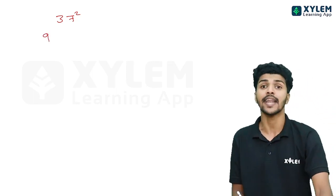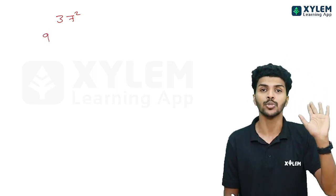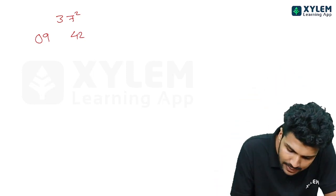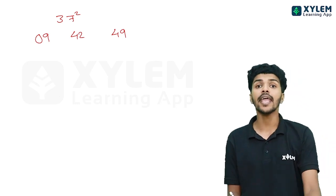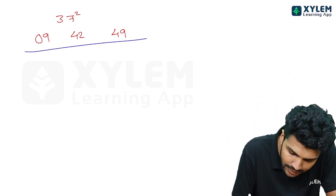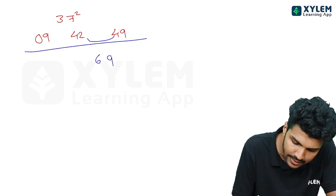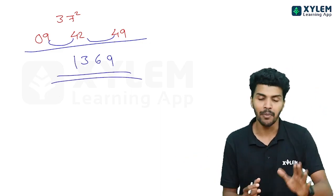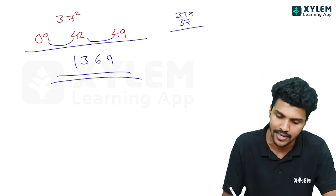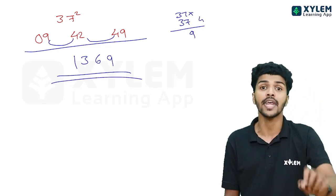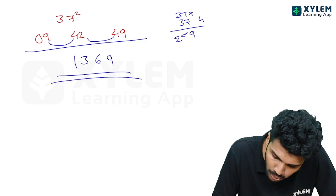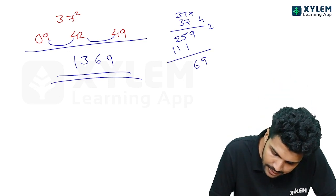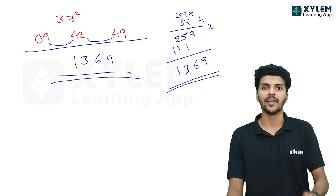Another example: 37 squared. 3 squared is 9. 2 times 3 times 7 is 42. 7 squared is 49. Combining: 9, 42, 49 — giving 1369.